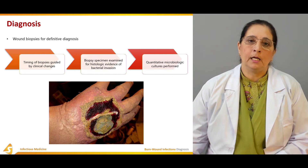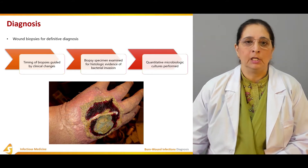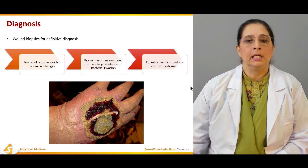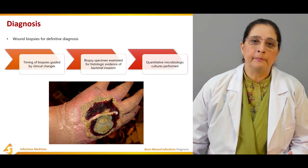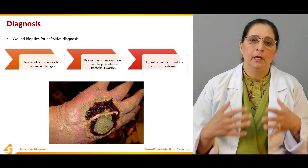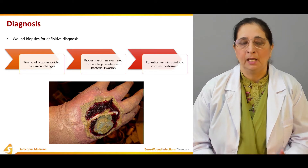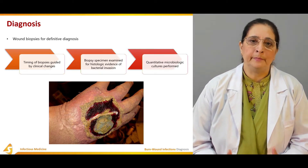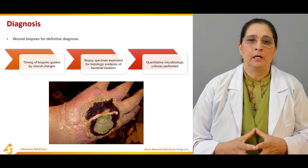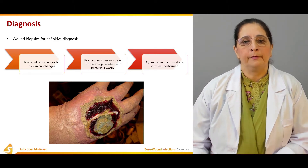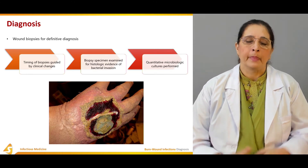Biopsies are done to look for histological evidence of invasion of microorganisms or bacteria, and cultures can also be performed for the definitive identification of the causative microorganism. Cultures use specimens obtained from burn wound infections, such as any purulent material or sloughed tissue, to find the specific organism so that proper treatment can be performed.